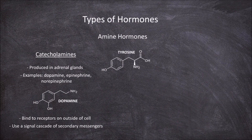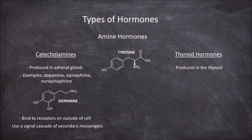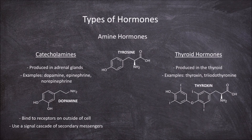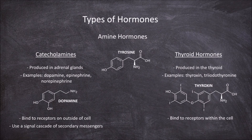The second group of tyrosine derived hormones are the thyroid hormones, which are produced in the thyroid gland. Examples from this group are thyroxine and triiodothyronine, which are both involved in stimulating the digestive system. Thyroid produced tyrosine derived hormones are similar to steroid hormones in that they bind to receptors within the cell and act as primary messengers themselves.